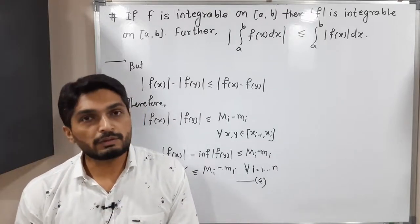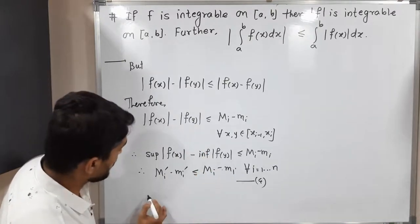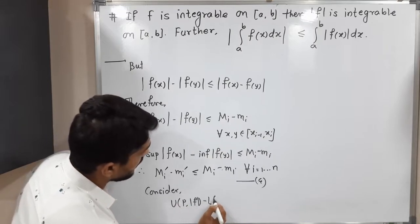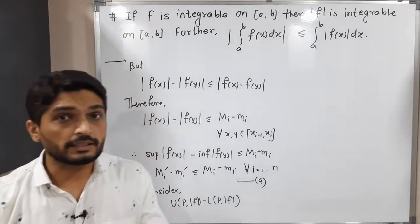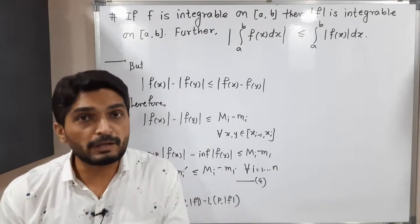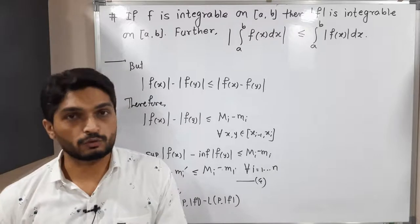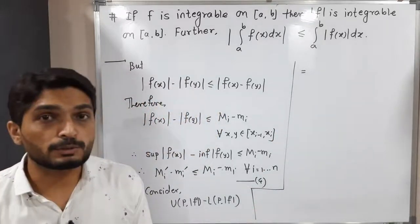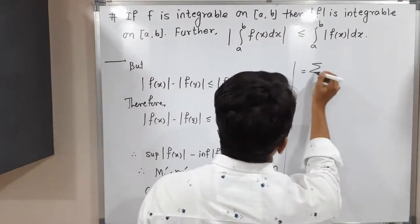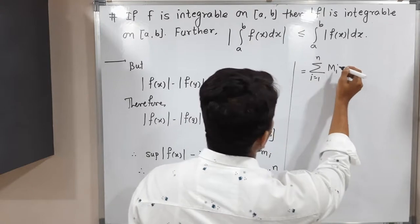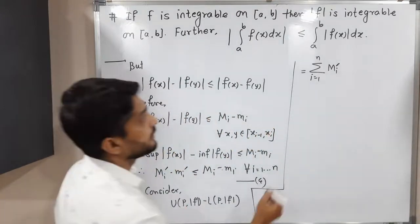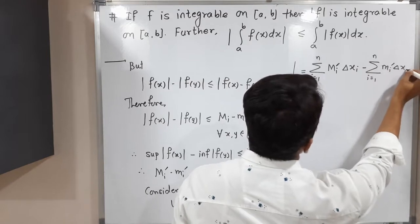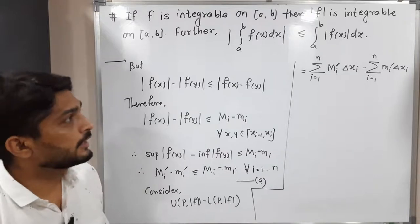Now let us prove the final thing. Consider U(P, |f|) − L(P, |f|). Our final target is to prove that |f| is Riemann integrable, meaning we have to prove that the upper sum minus lower sum is less than epsilon for the function |f|. By definition of upper and lower sums, this equals: Σᵢ₌₁ⁿ Mᵢ' Δxᵢ − Σᵢ₌₁ⁿ mᵢ' Δxᵢ = Σᵢ₌₁ⁿ (Mᵢ' − mᵢ') Δxᵢ.